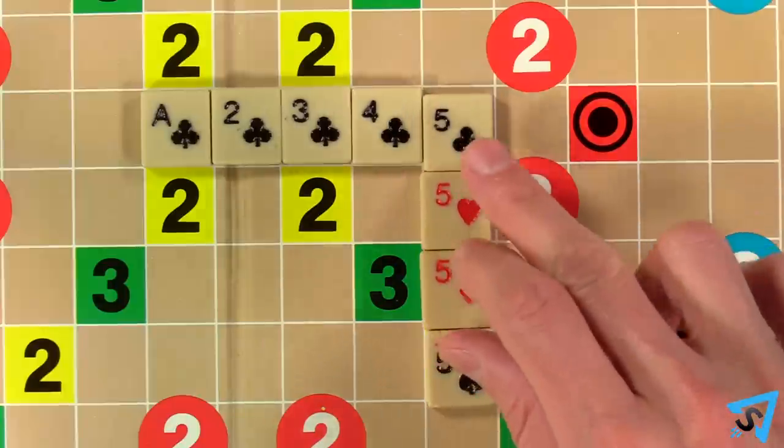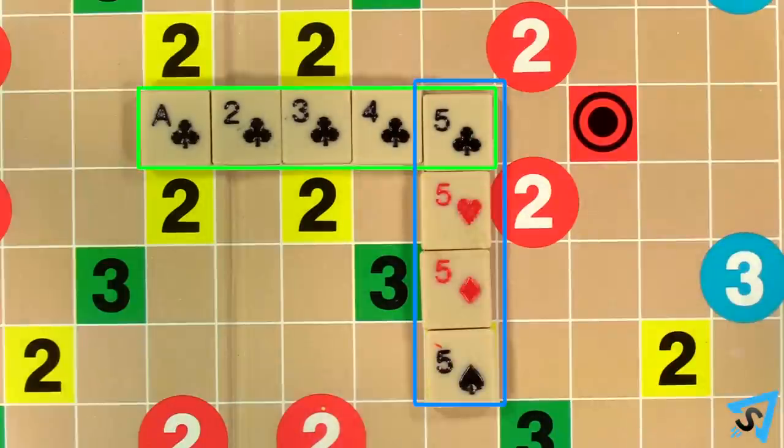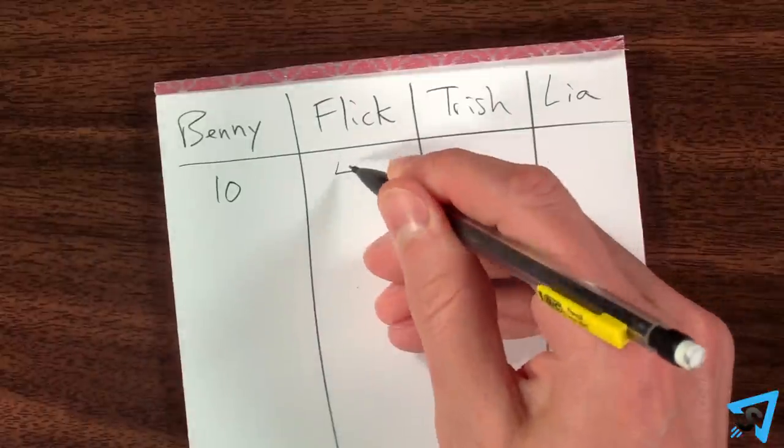Add up all the tiles in the entire meld or run, not just the tiles you placed, and record your score on paper.